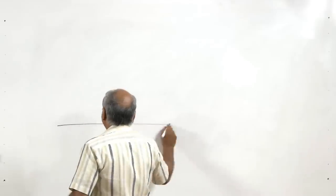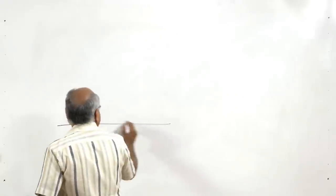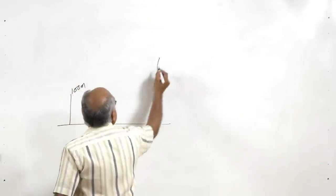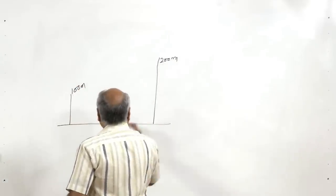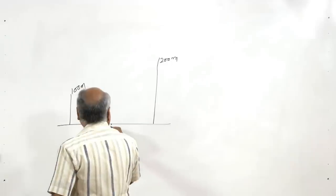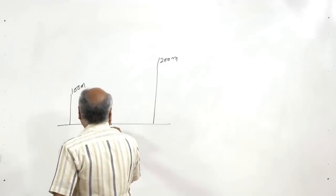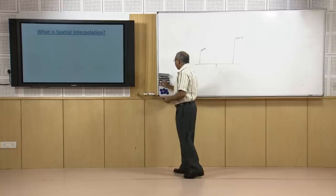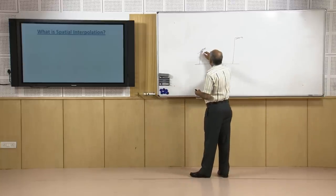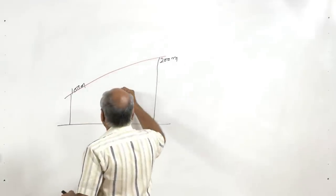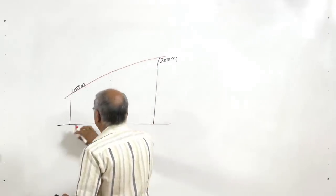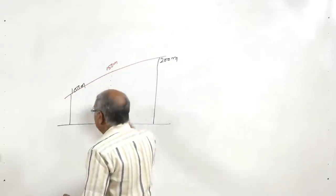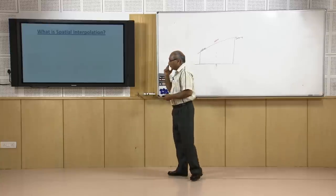For example, if this is 100 meters and this is 200 meters height, and I want to know the height of a point in between, a simple approach is to connect them linearly and say that the height of the center point may be 150 meters. This is the linear method of interpolation.